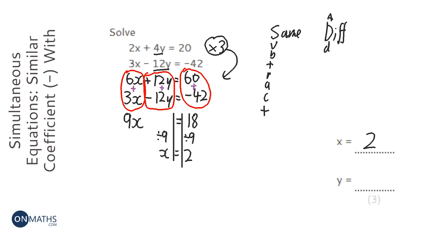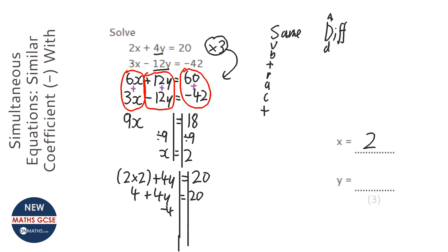So I'll pick the top one. So we've got 2 times 2 plus 4y equals 20. It doesn't matter which one you pick. I just normally pick the top one for some reason. Okay, so we've got 4 plus 4y equals 20. Minus 4 both sides.